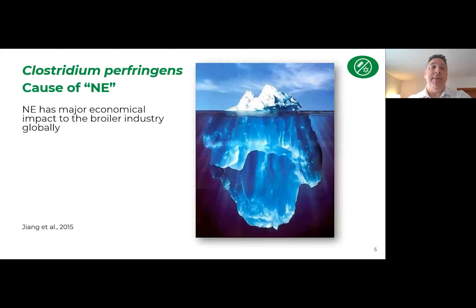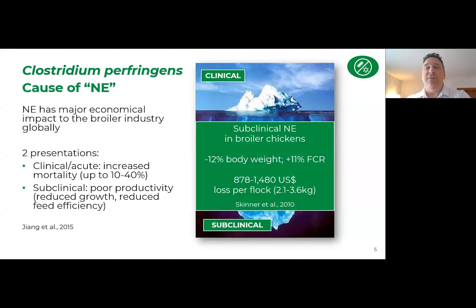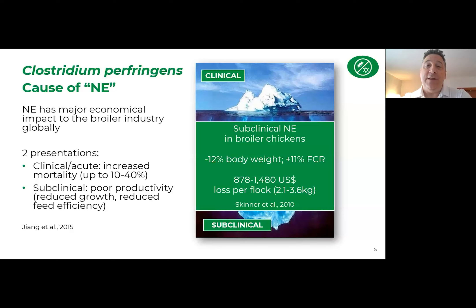Necrotic enteritis has a major global economic impact on the industry. Clinical disease can induce mortality up to 40% of the flock. However, subclinical NE is really not diagnosed very often and is related to poor productivity such as reduced growth and higher feed conversion — impacts of up to 12% on body weight and feed conversion, amounting to roughly $1,500 per flock on reduced animal performance. That data is 13 years old, and with feed costs having essentially doubled since then, those economic impacts have gone up considerably.